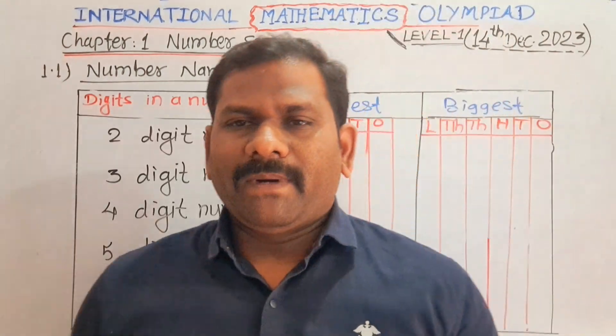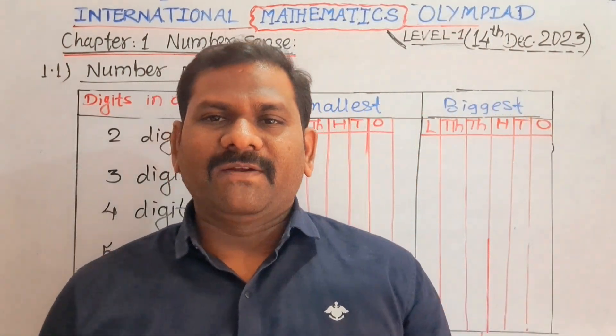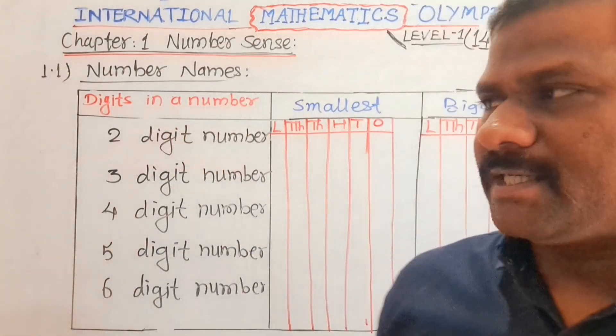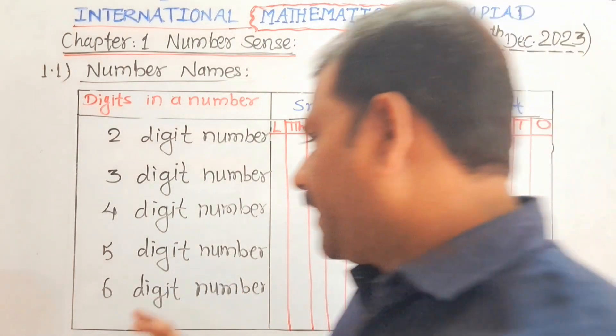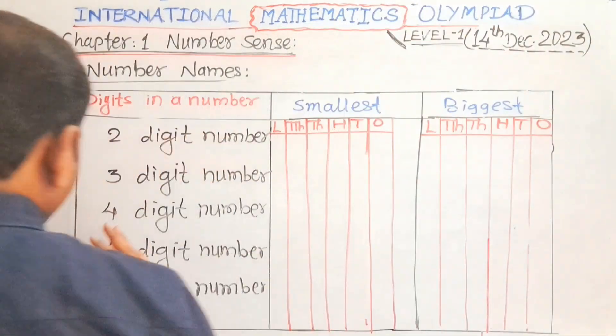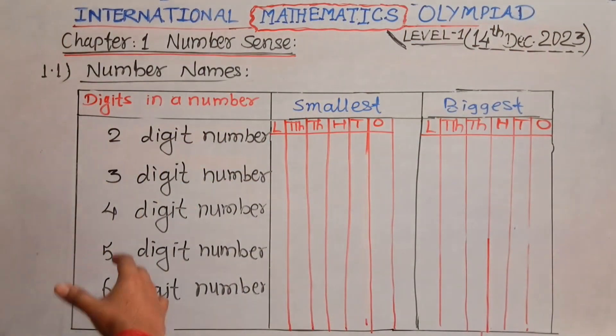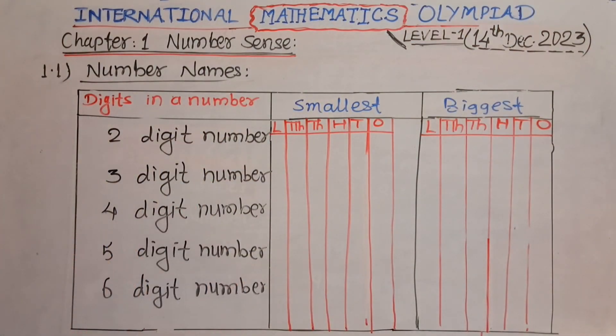In front of you there is a chart explaining 2-digit numbers, 3-digit numbers, 4-digit numbers, 5-digit numbers, and 6-digit numbers.